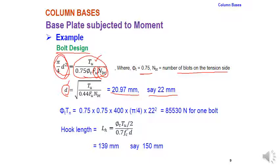The tensile capacity of one 22 mm bolt is phi*Tn = 85,530 N. The hook length lh = phi*Tn / (0.7 × fc' / 2) = 139 mm, rounded up to 150 mm.